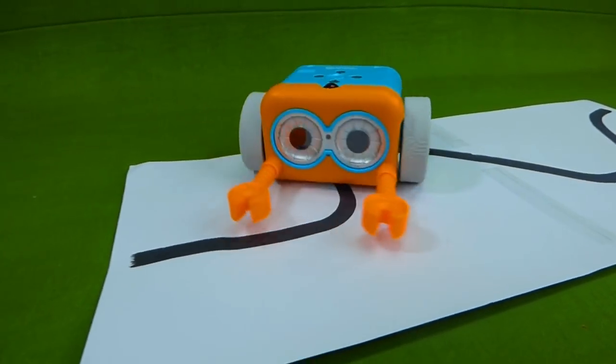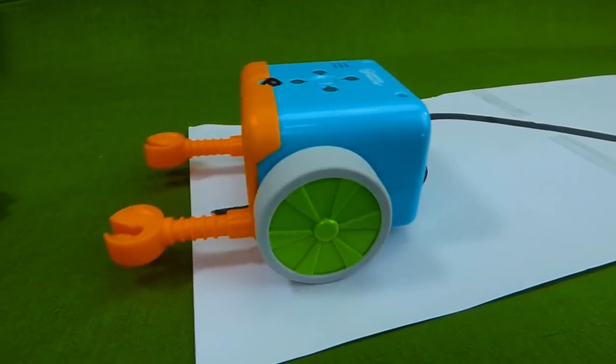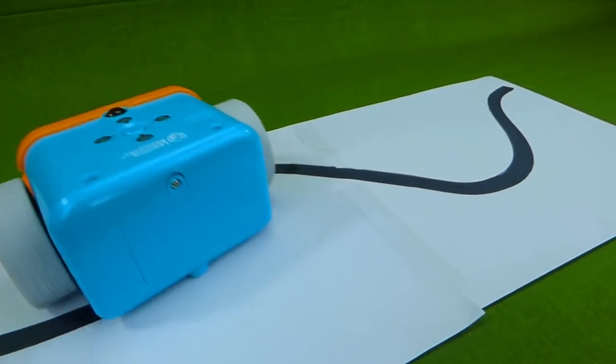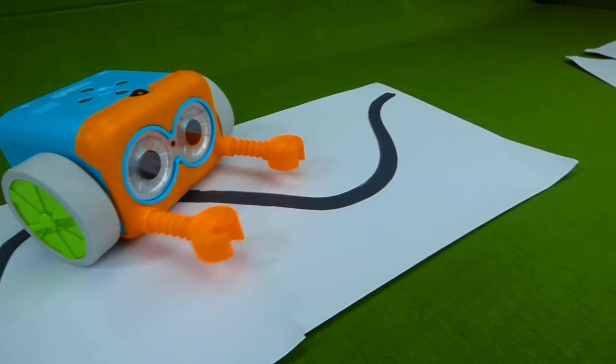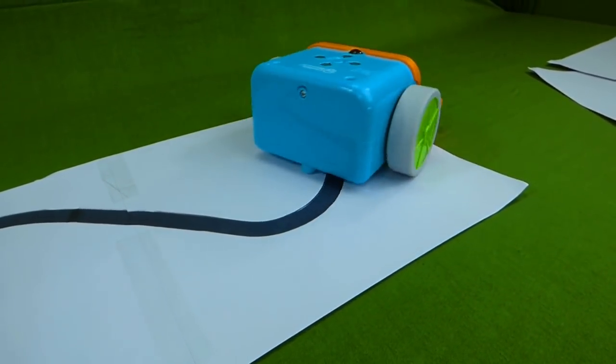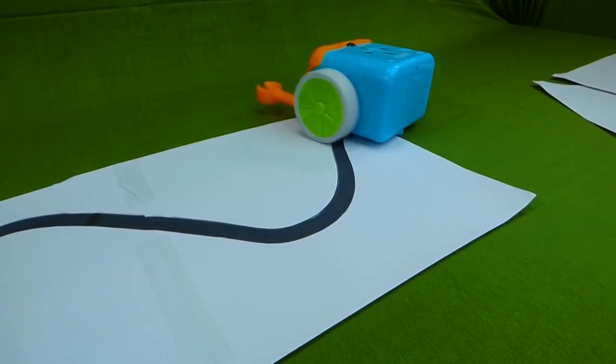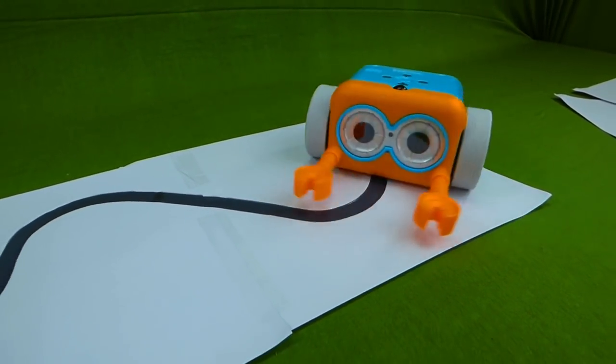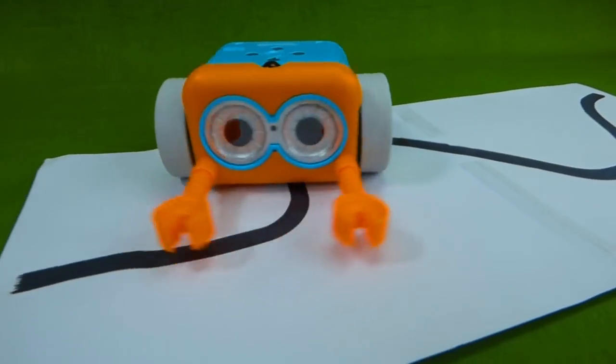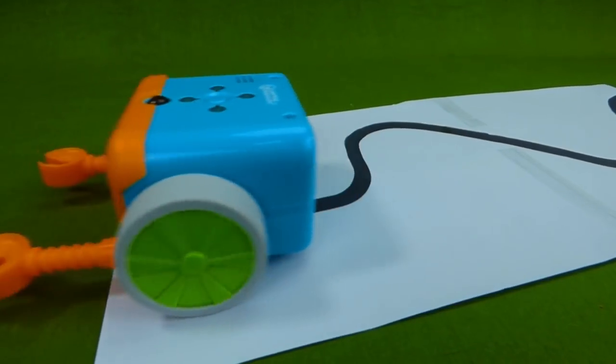And he will actually just continue to go back and forth until you shut him off. So he will follow your track. See how he's looking for the black line? Woohoo! Botley! He's whistling while he's working! He does this so well!